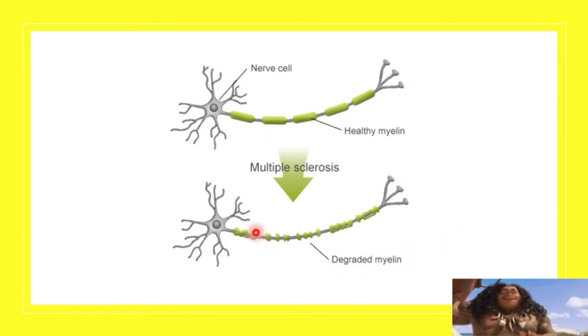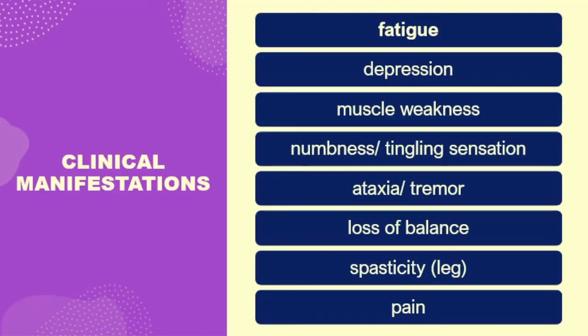Degraded myelin slows down the transmission of nerve impulses. Clinical manifestations commonly include fatigue, which is the most frequent complaint, as well as depression, muscle weakness, numbness and tingling sensation, ataxia or uncoordinated movements, tremors, loss of balance, and spasticity of the legs. Pain is also present. The tremor tends to be intentional, meaning it occurs when the patient initiates movement.